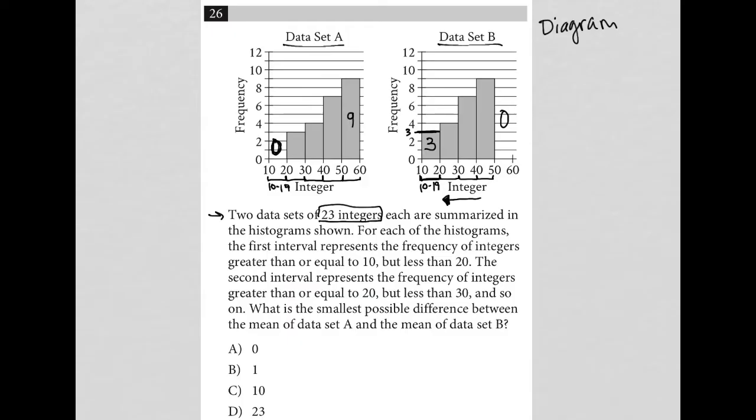So our expectation is that the mean of data set B will be lower, right? So B in terms of mean, if we were to do the math, the mean of data set B would be less than the mean of data set A. So how do I use that information to my advantage to figure out the smallest possible difference between the mean of data set A and the mean of data set B?